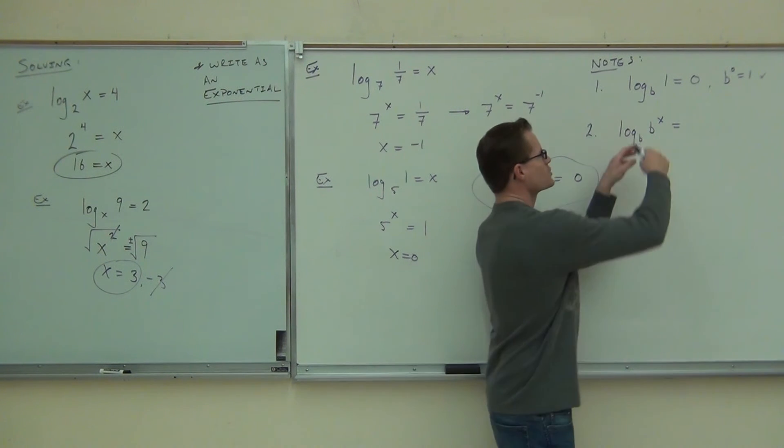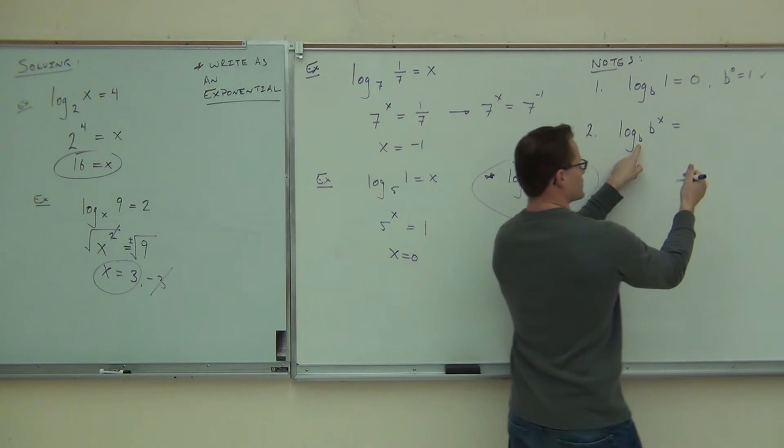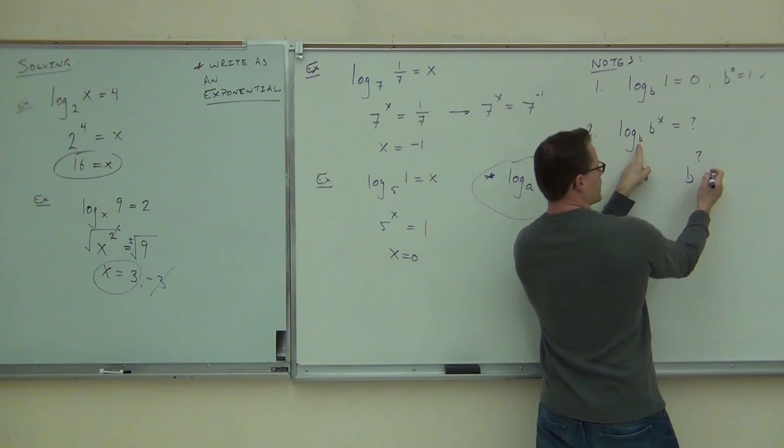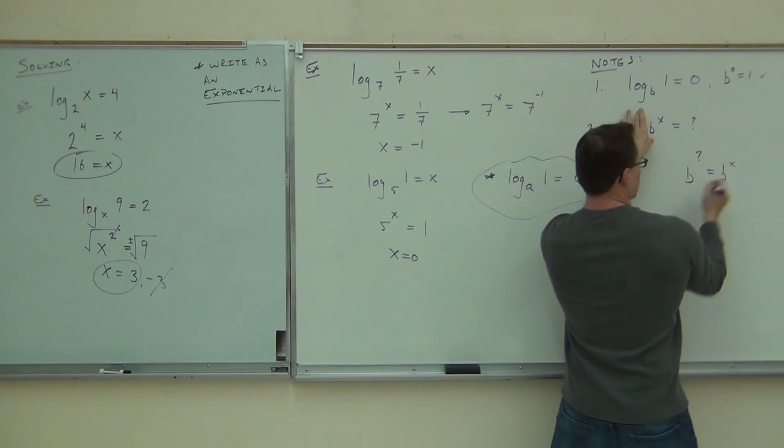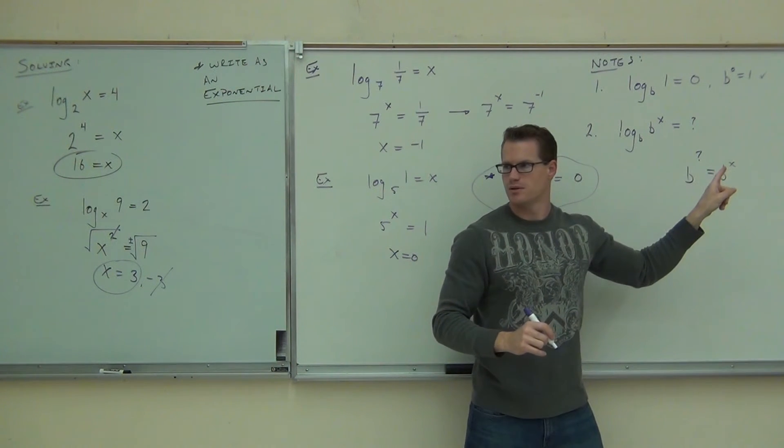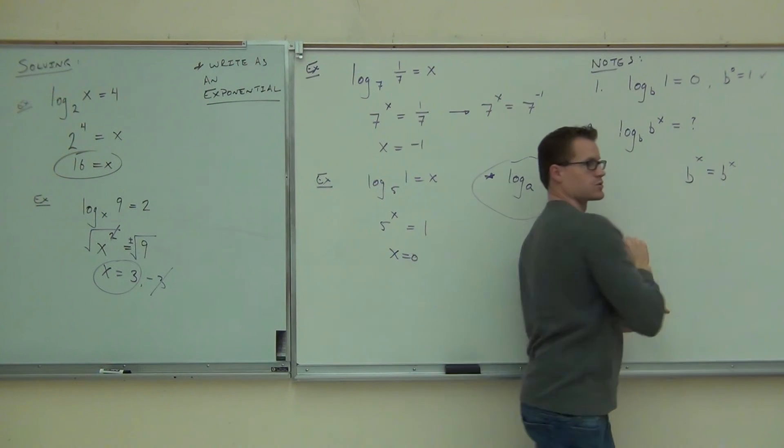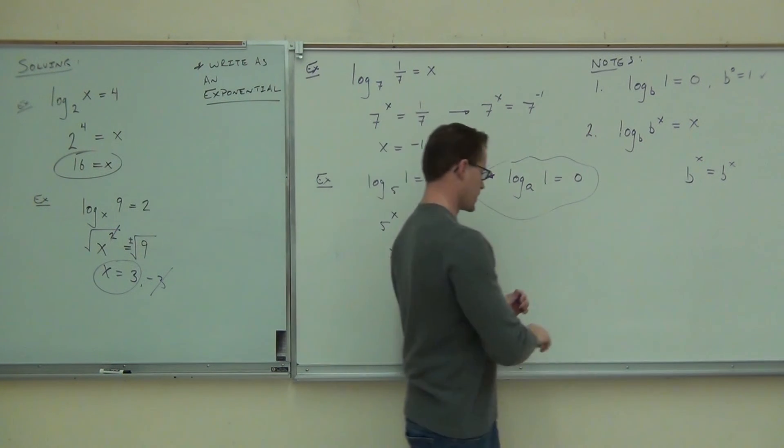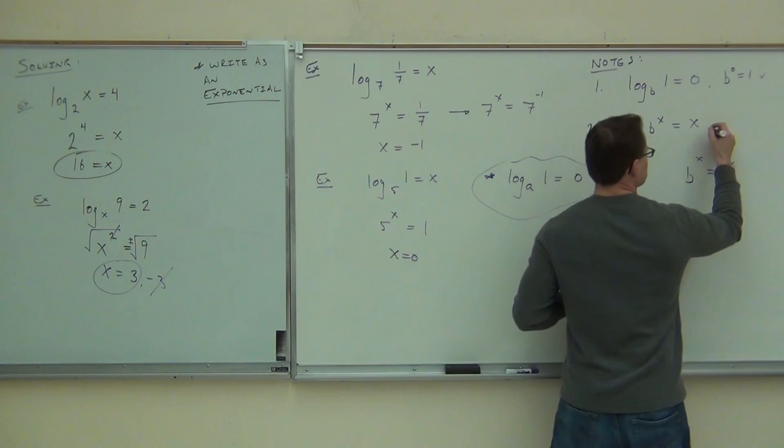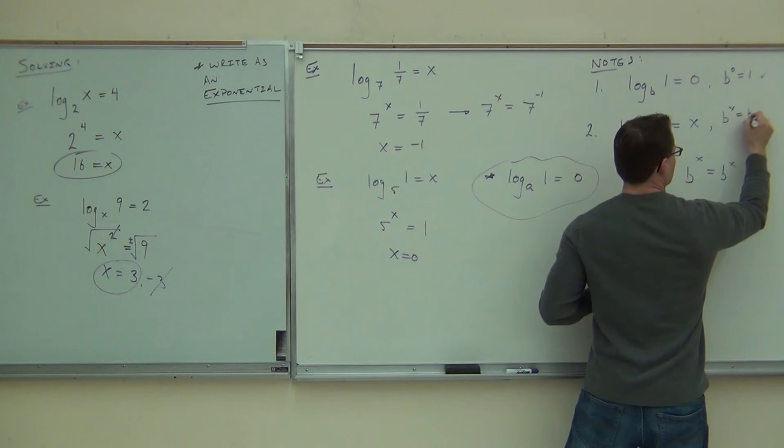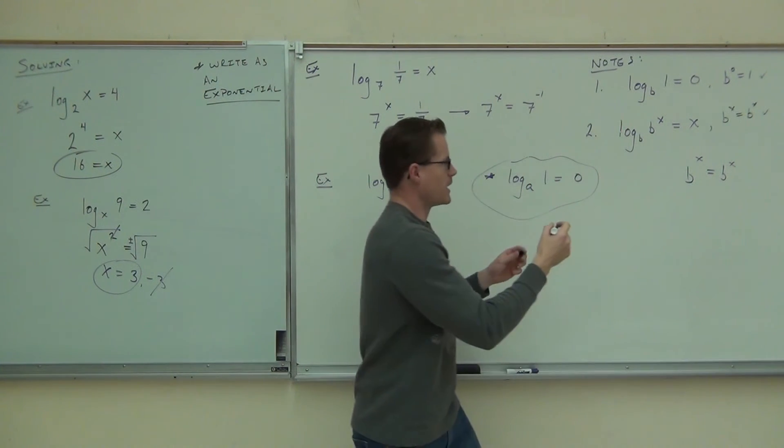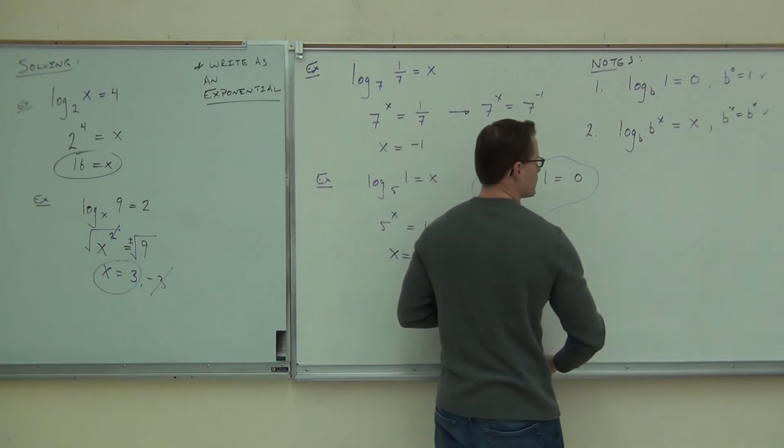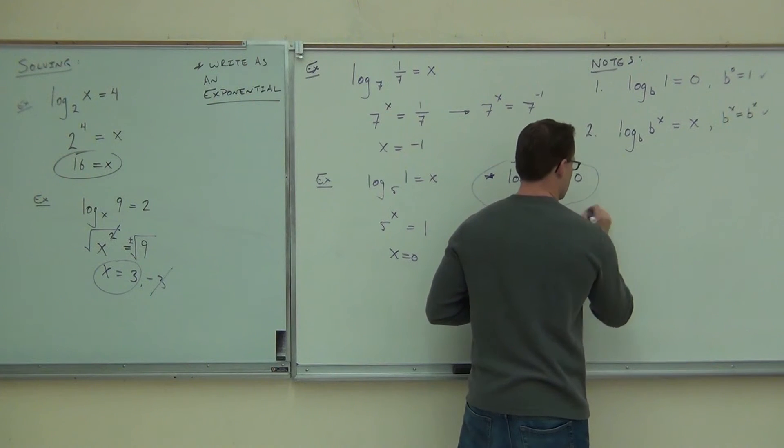Because it's B raised to the X. Check it out. What is your base here? B. So this says, watch, B to what, this is what right now, B to the what equals B to the X. If your bases are the same, what do you know about your exponents? The same. So then this would absolutely have to be an X. True. Then this is an X. You guys are right. Very good. That's because B to the X equals B to the X. I have that right here.